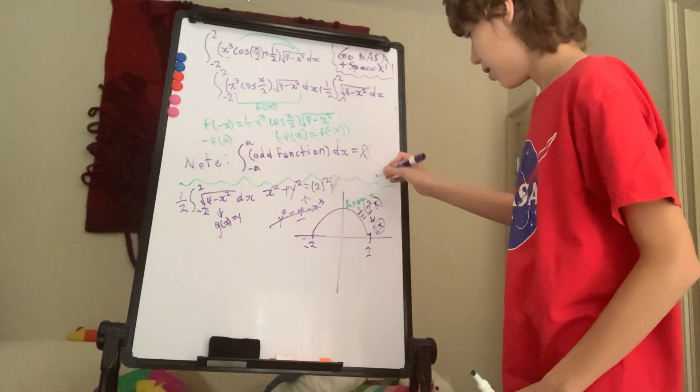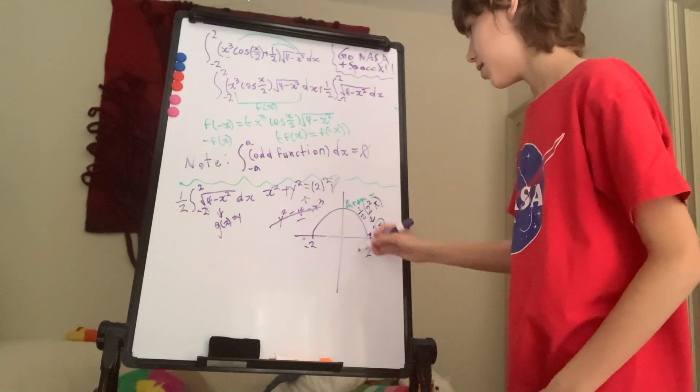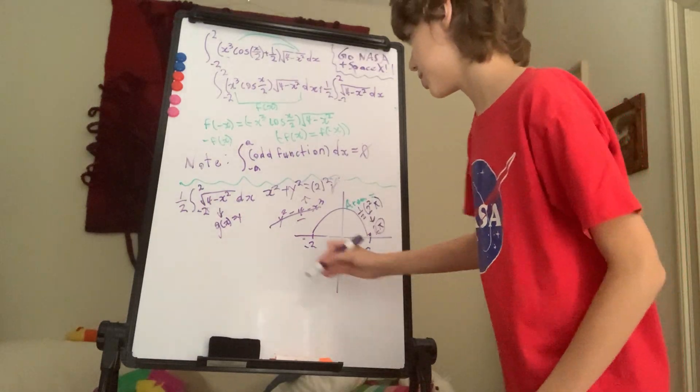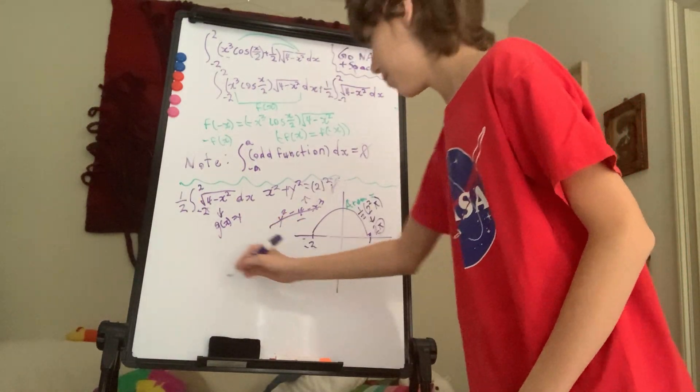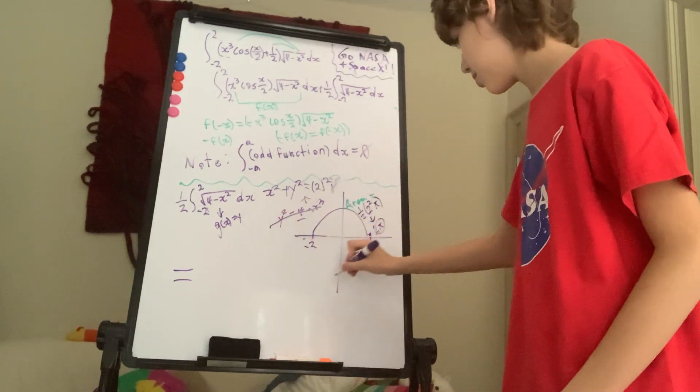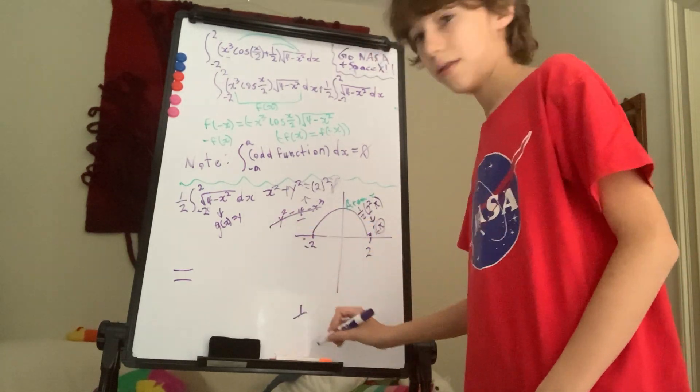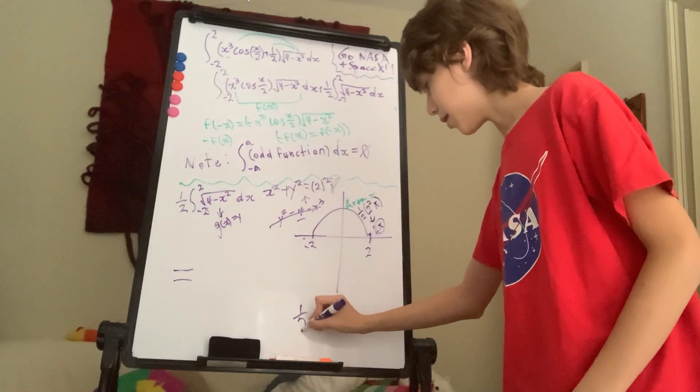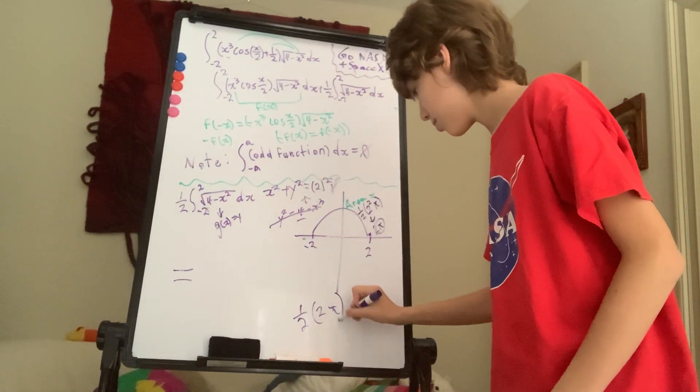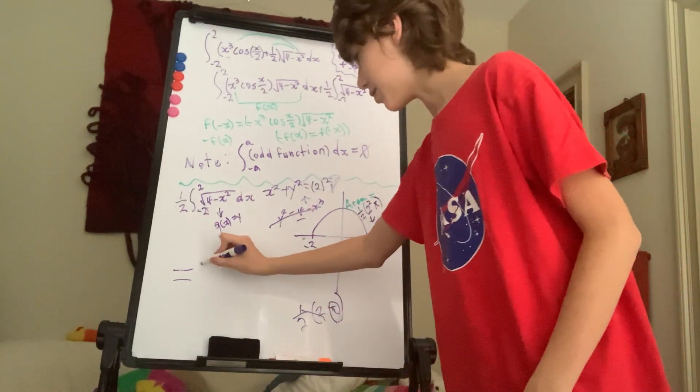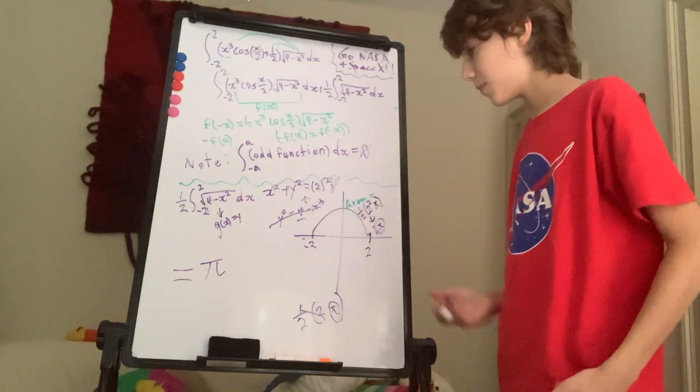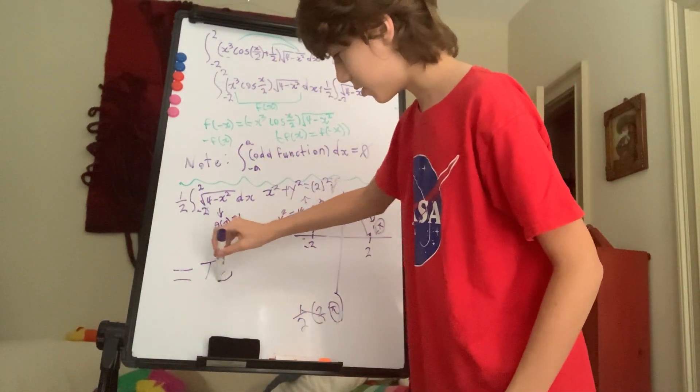Okay, so we have, we evaluated that. Now to get our final answer, believe it or not, all we have to do is just multiply one half times two pi, which is just pi. So our answer is pi. Right? This is our answer.